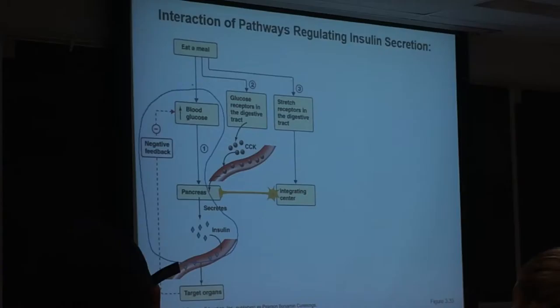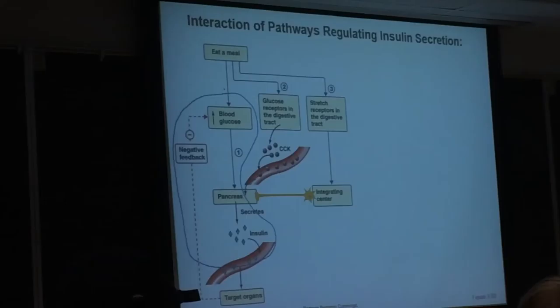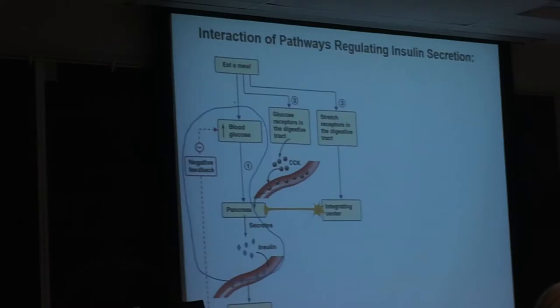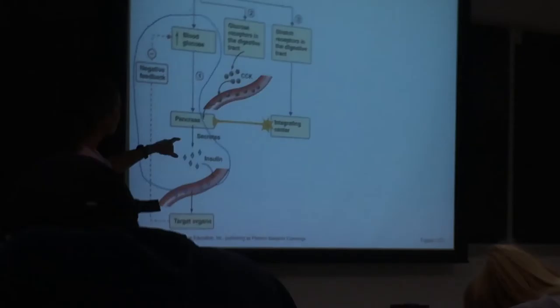Step number one, don't leave thinking that insulin release is all about blood glucose levels. The insulin release is not entirely dependent upon what the blood glucose levels are. That's one stimulus to the pancreatic beta cells to trigger release of insulin, but we have to recognize there are other ways that we can bring about the release of insulin.